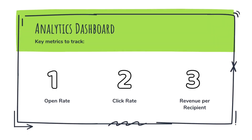Klaviyo gives you detailed analytics to track how your campaigns and flows are performing. Look at metrics like open rates and click rates, revenue per recipient, unsubscribe and bounce rates, and conversion rates from specific flows. Use this data to test and improve. If one subject line performs better, use that style moving forward. If a certain segment drives more revenue, focus your efforts there. Optimization is ongoing, but it pays off big time.